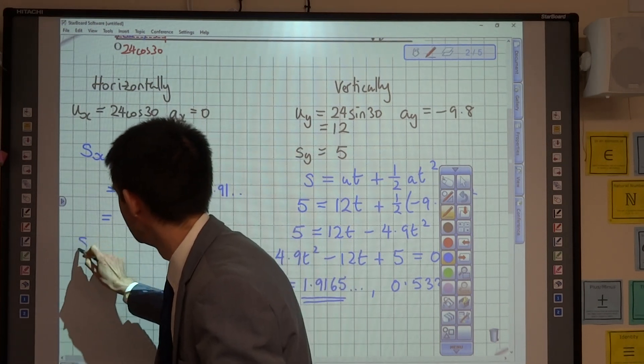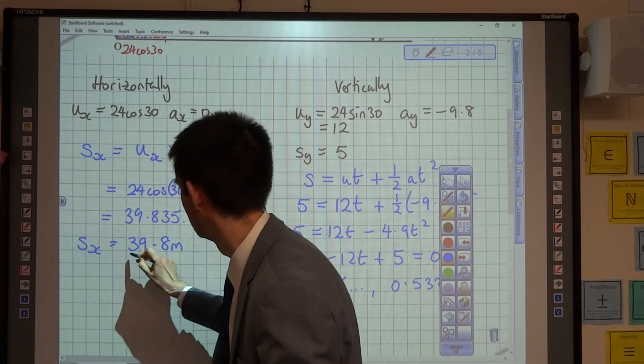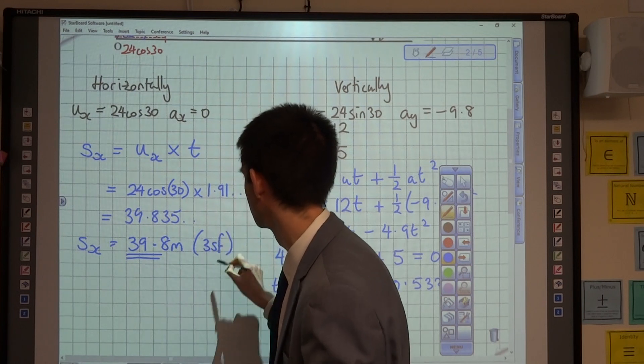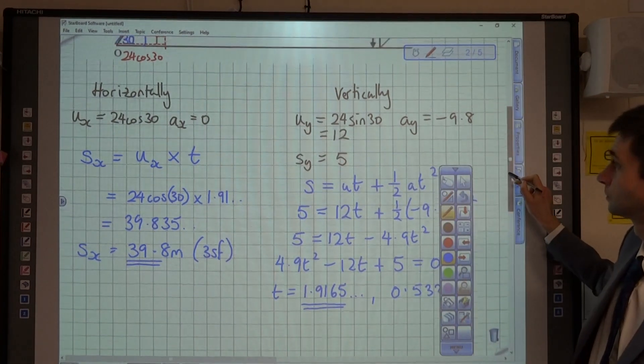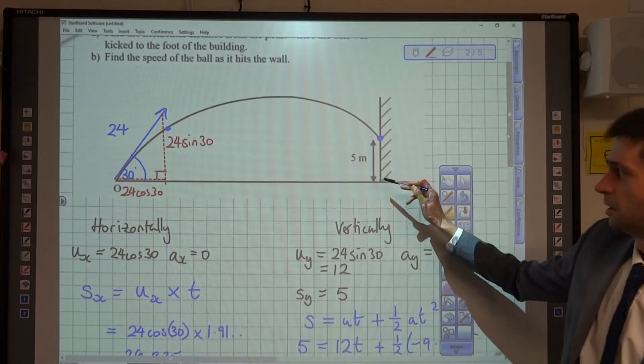So the displacement in the x direction to three significant figures is 39.8 metres, which is this distance measured across here.